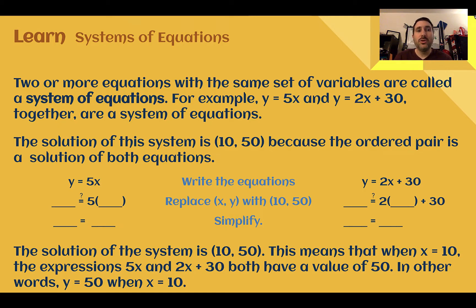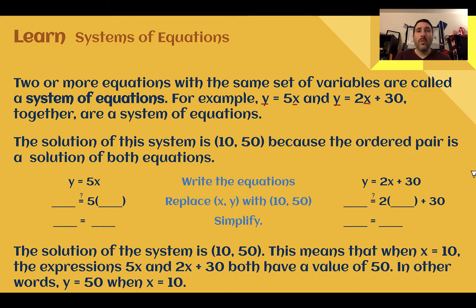Systems of equations: two or more equations with the same set of variables are called a system of equations. For example, y equals 5x and y equals 2x plus 30 together are a system of equations. They both have the same variables — there's a y and an x in both. When dealing with a system of equations, we are trying to find a coordinate point as the solution, since we need to solve for both x and y. The solution would be (10, 50).